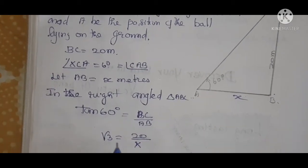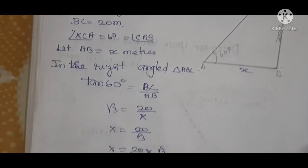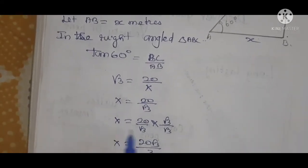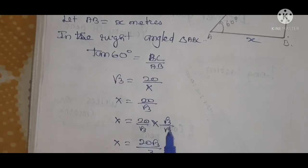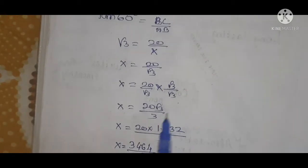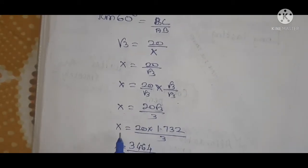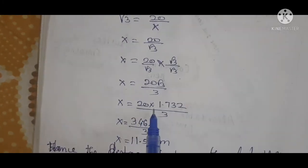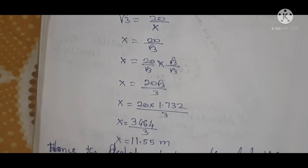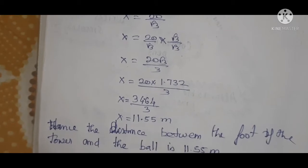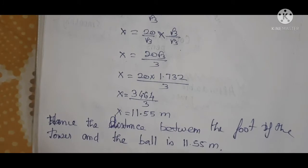The value of tan 60° is √3, which equals BC (height of tower = 20) divided by AB (= x). So x = 20/√3. Rationalizing the denominator by multiplying by √3/√3: x = 20√3 / 3. Substituting √3 = 1.732: x = 20 × 1.732 / 3 = 34.64 / 3 = 11.55 meters. Therefore, the distance between the foot of the tower and the ball is 11.55 meters.